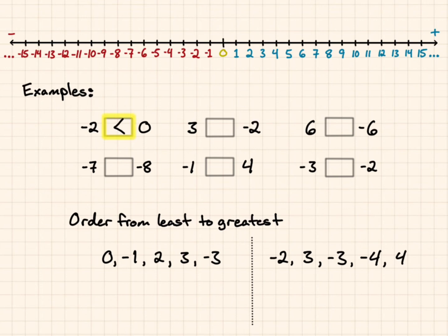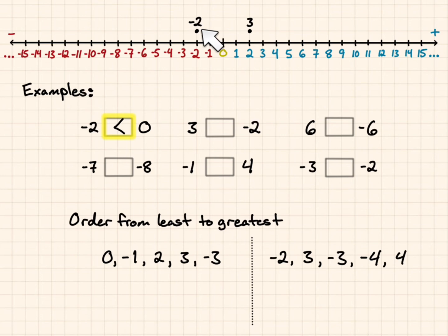If I'm comparing 3 and negative 2, I'll put those on the number line. I can see that negative 2 is to the left of 3, so 3 is going to be greater than negative 2. The symbol opens towards 3.